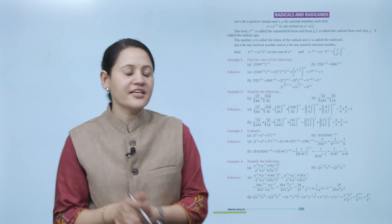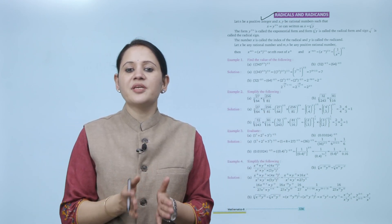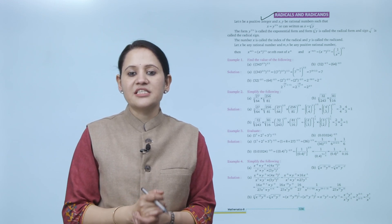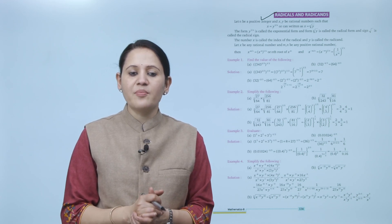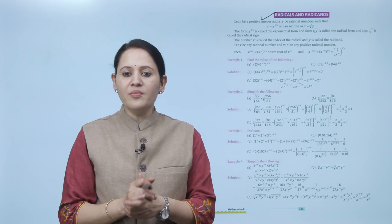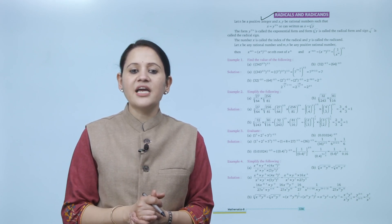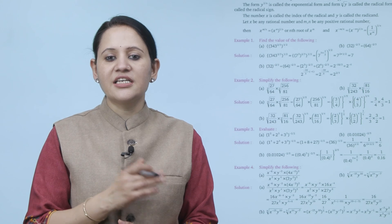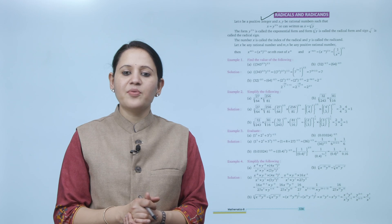Next is radicals and radicands. Let n be a positive integer and x and y be rational numbers such that x = y^(1/n), which can also be written as x = n-th root of y. The form y^(1/n) is called the exponent form, and the form n√y is called the radical form. The sign √ is called the radical sign. The number n is called the index of the radical, and y is called the radicand.